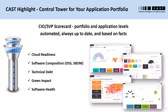Focusing on CAST Highlight, it acts as a control tower for application portfolios, providing senior leaders a scorecard at both the portfolio and application levels. It's automated, always up to date, and based on facts. The types of insights it provides include cloud readiness for planning cloud migration or application modernization, software composition analysis to measure open source risks or produce a software bill of materials, security vulnerabilities, licensing risks, and obsolete components. It gives insights on technical debt, green impact for sustainability, and software health metrics like resiliency, agility, and complexity.